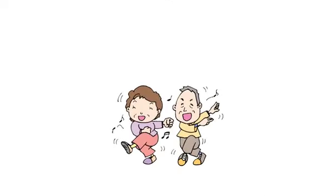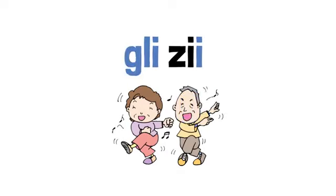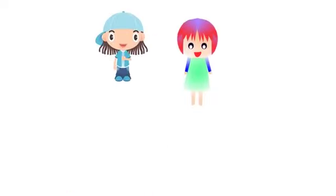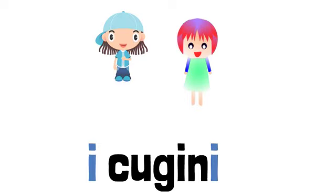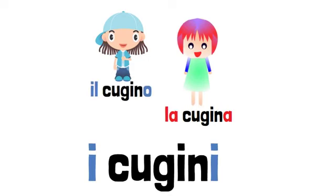Our girl also has aunties and uncles, gli zii — lo zio, la zia. And cousins, i cugini — la cugina, il cugino.